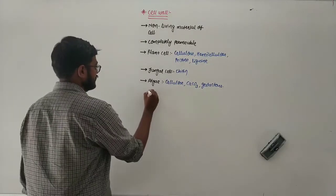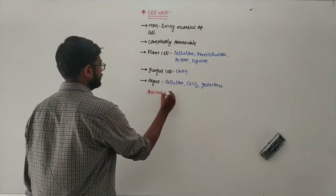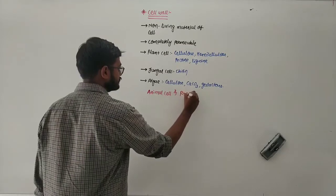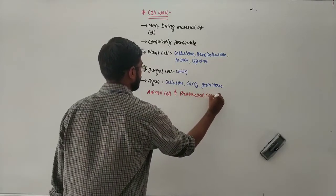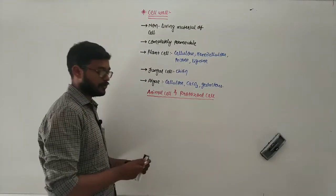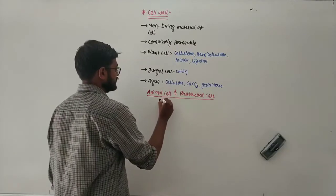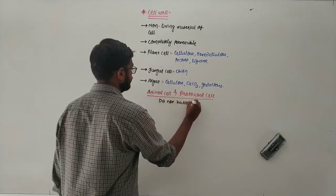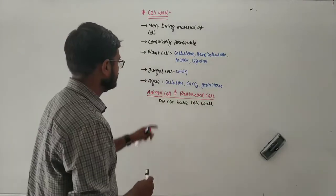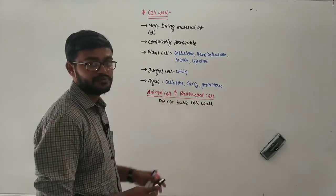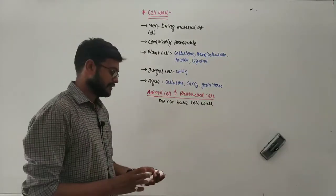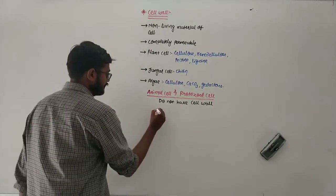It is important to note that the animal cell and the protozoal cell do not have a cell wall. Both the animal cell and the protozoal cell are the only kinds of cells which do not have a cell wall; all other kinds of cells have a cell wall.